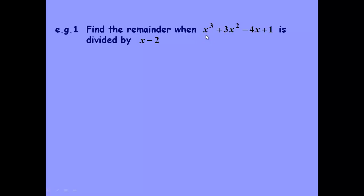We try to find the remainder when x cubed plus 3x squared minus 4x plus 1 is divided by x minus 2. We make it read as f of x. So if it's x minus 2, then we put a in as 2. So we look at f of 2, and that gives us the remainder.